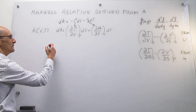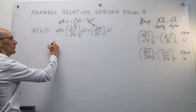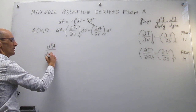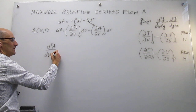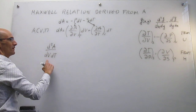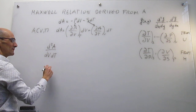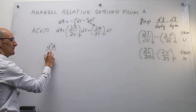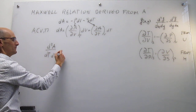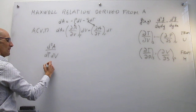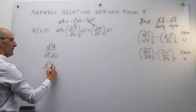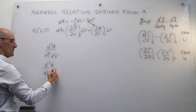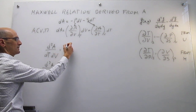Mathematically, path independence means you can first change the temperature and then the volume, or first the volume and then the temperature — it really doesn't matter. So we write one path going through the temperature first, and the other path going through the volume first.